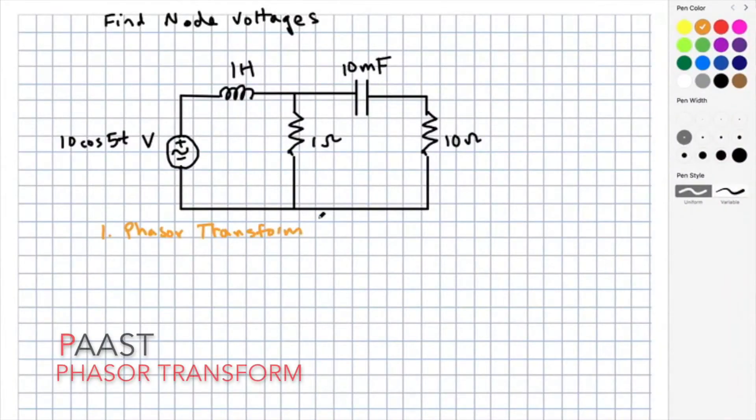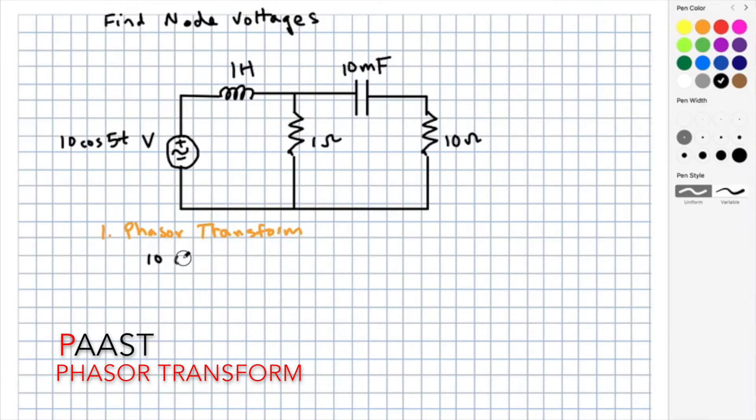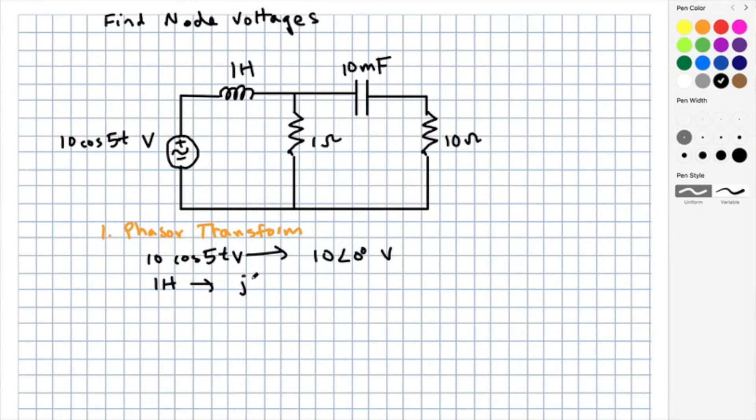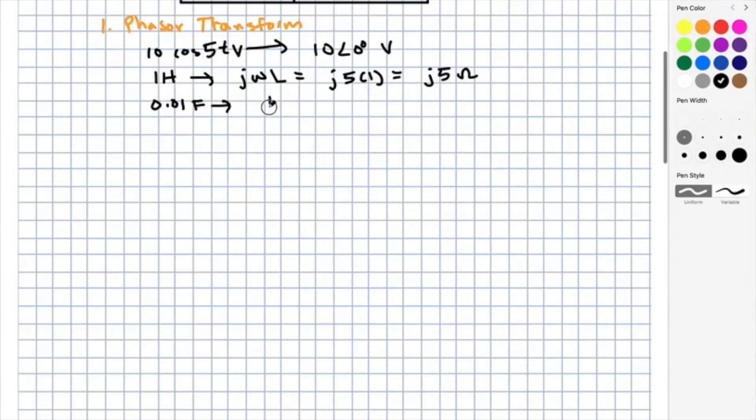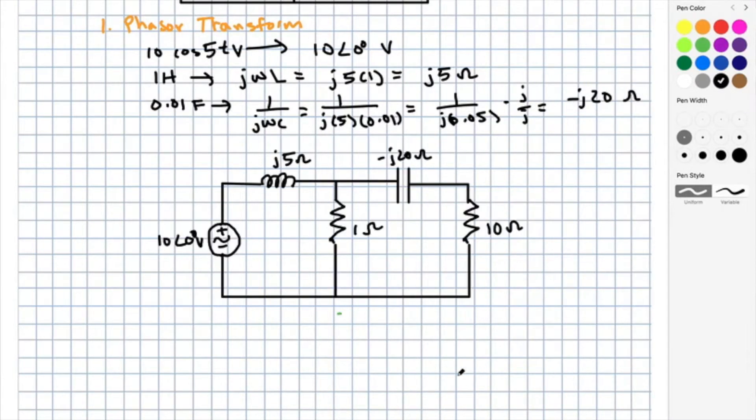In this example, I need to find the node voltages. I need to remember my PAST, so we start with step one, which is the phasor transform. The source converts to 10 angle zero degrees volts. The impedance of the inductor is j omega L, or j5 ohms. The impedance of the capacitor is 1 over j omega C. Plugging in values gives me 1 over j 0.05. If I multiply this by j over j and move the 0.05 to the top, I'm going to get negative j20 ohms. The impedance of the resistors is just the resistance values.